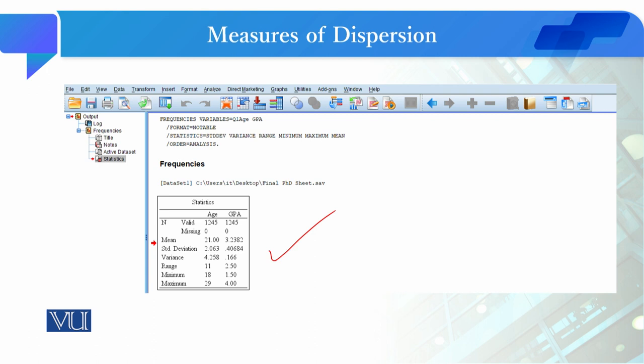After you continue, the output sheet will show a table with dispersion measures. Here I have a variable for age and GPA.